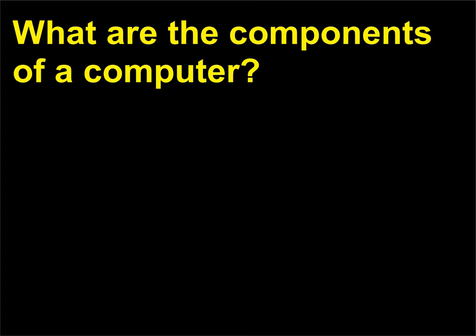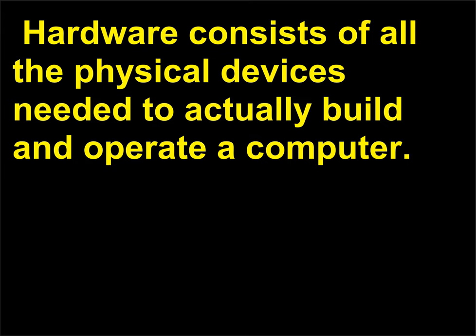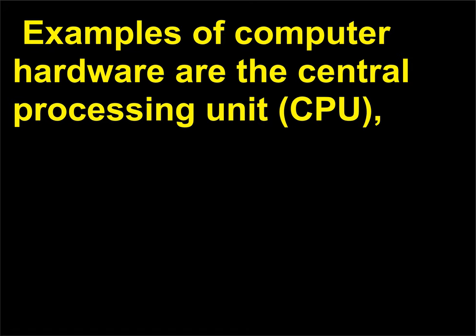What are the components of a computer? Computers have two major components: the hardware and the software. Hardware consists of all the physical devices needed to actually build and operate a computer. Examples of computer hardware are the central processing unit, CPU.